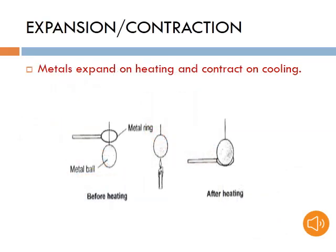Expansion and contraction. Metals expand on heating and contract on cooling. Expansion is the process where a material grows in size on being heated. On the other hand, contraction is an action where the size of an object is reduced when it is cooled. This can be viewed as the opposite of expansion.